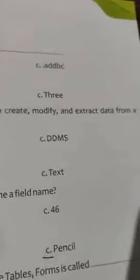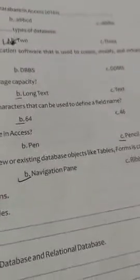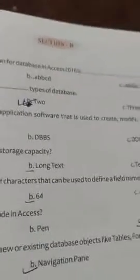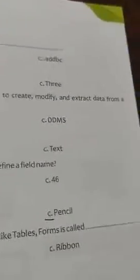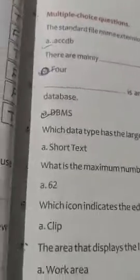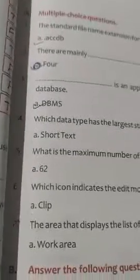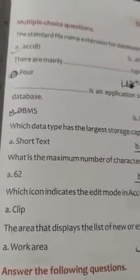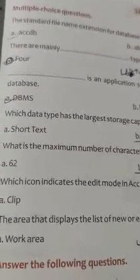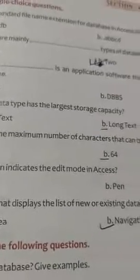The second and third option: dash is an application software that is used to create, modify, and extract data from a database. Options are DBMS, DBBS, and DDMS. The answer is DBMS — that is, Database Management System. Which data type has the largest storage capacity? Options: short text, long text, and text. The answer is long text.